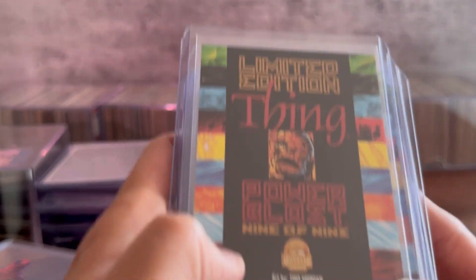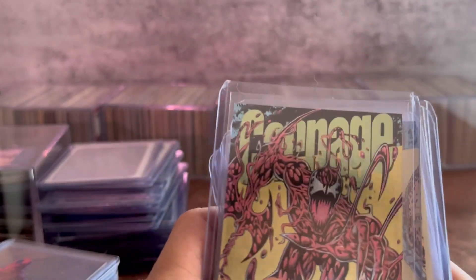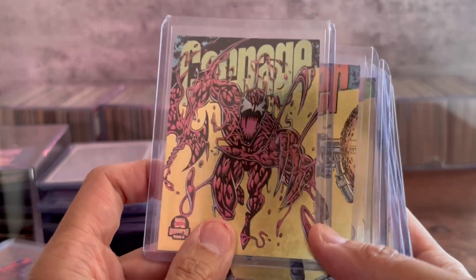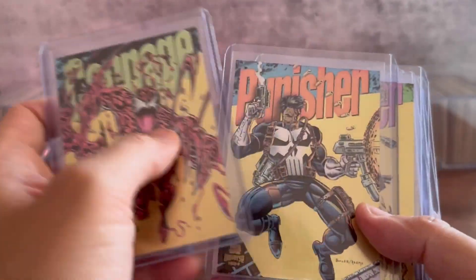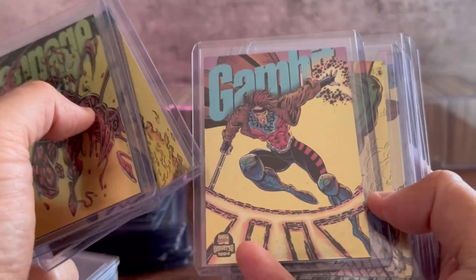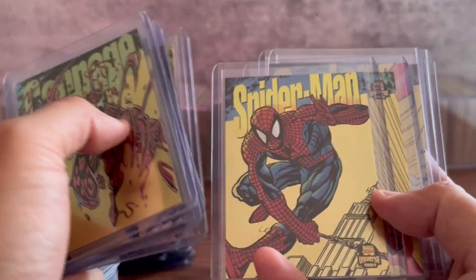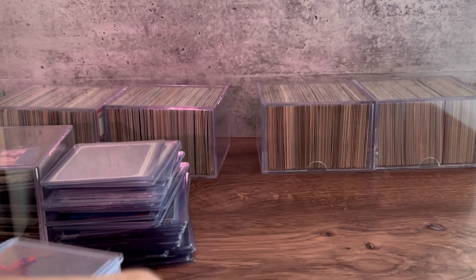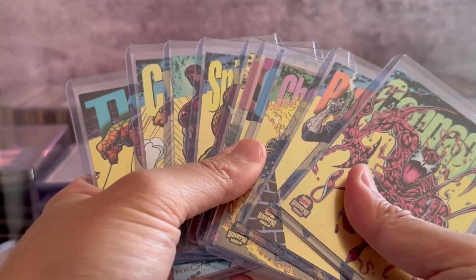In this case, it's nine of nine. This particular set has gold foil and regular foil. This is the gold foil, you can tell by the gold finishing here. Beautiful cards, right? That's one set, and upon investigating I have two of these sets.